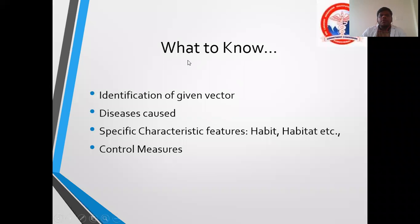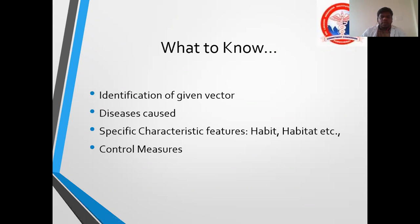So what do we have to know from this topic? We have to know how to identify a given vector, what diseases are caused by that particular vector, if the vector has any specific features, and what are the control measures of those diseases caused by that particular vector.